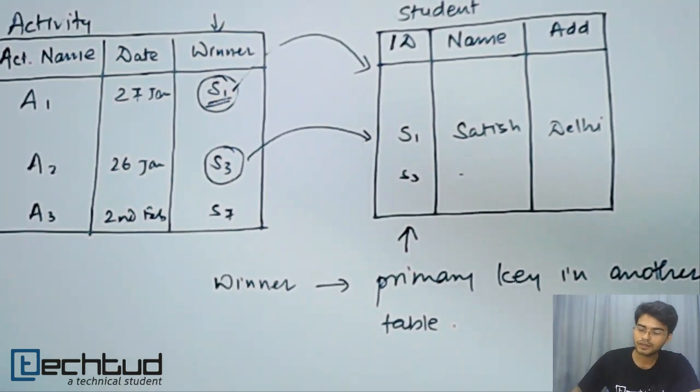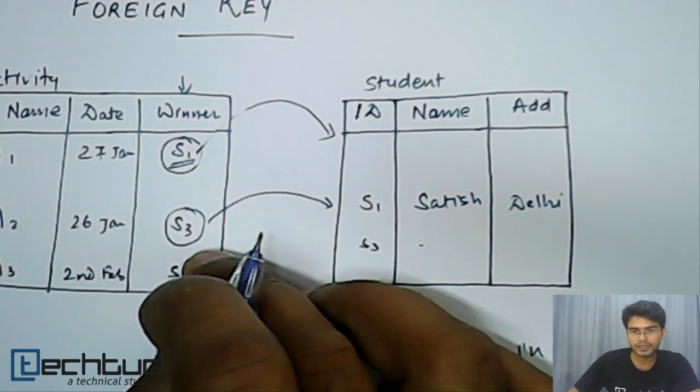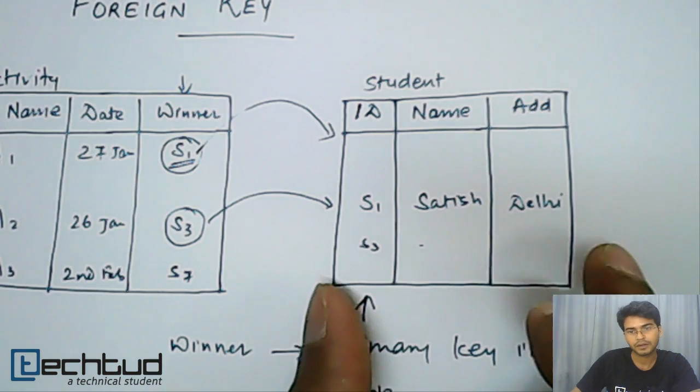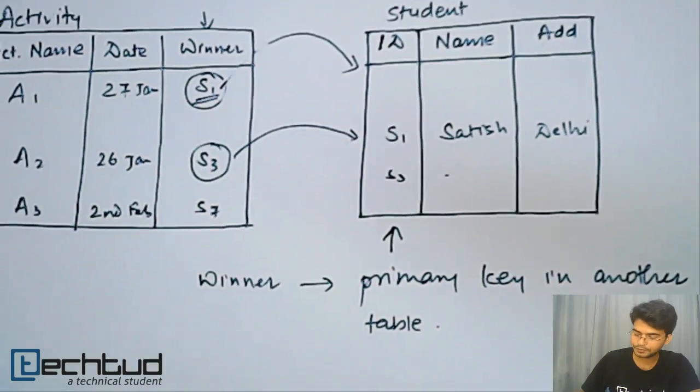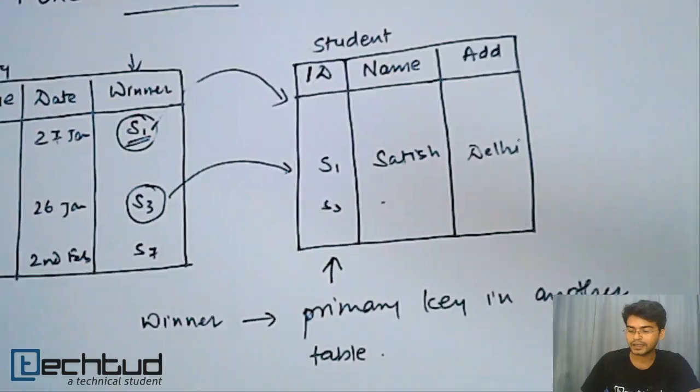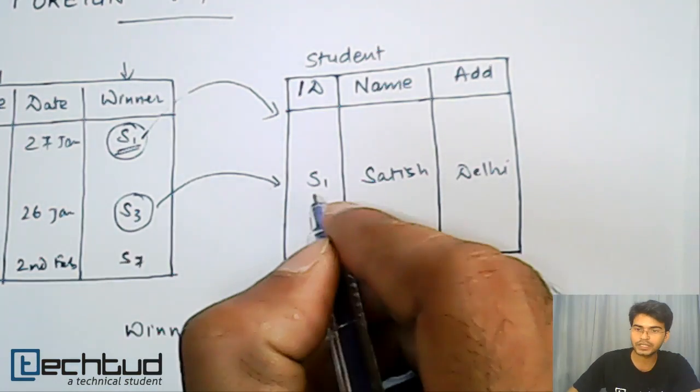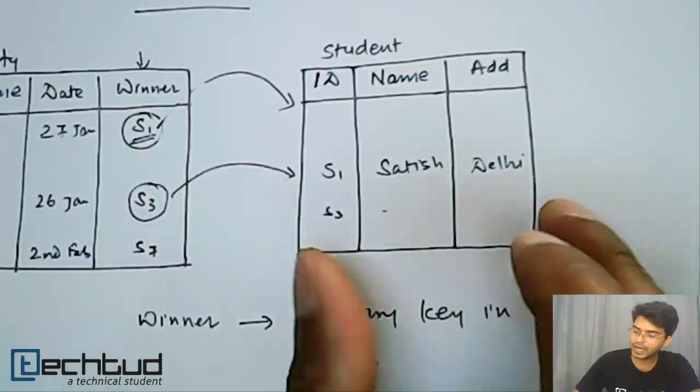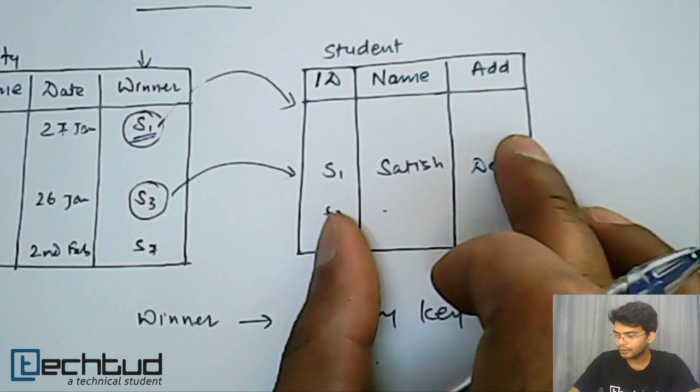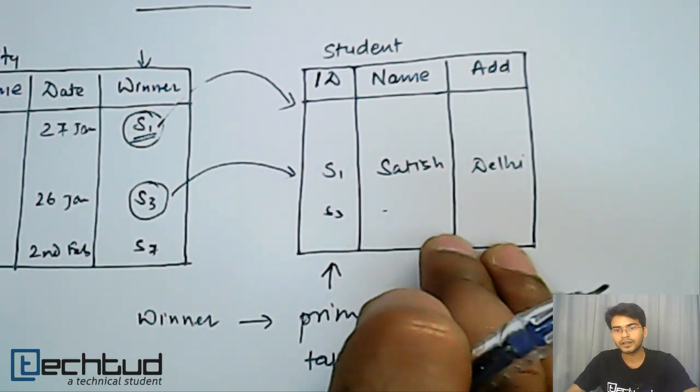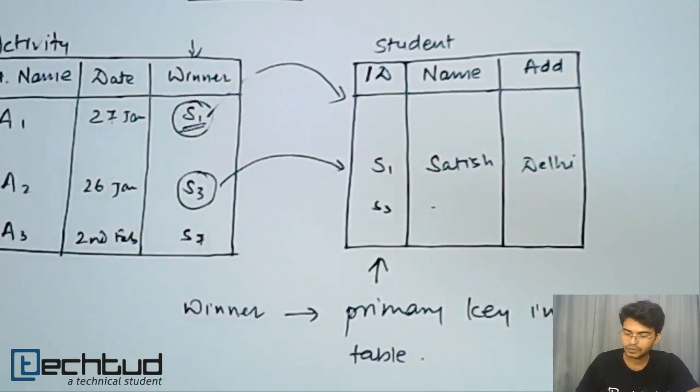So the important rule is that whatever key we are going to enter, that should be present in the referencing table or the referred table which we are referring. Now the next rule is that, let's say I want to delete a student S1. So when I am going to delete something from this main parent table to which we are referring, then in that case we will have to delete all the references.